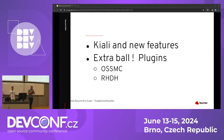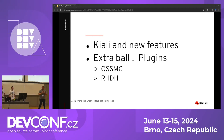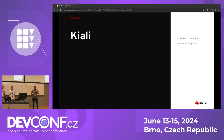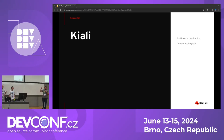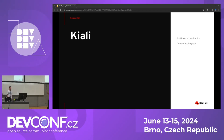This is the agenda for today: we are going to have a rundown about Kiali, then move to the Kiali plugins — first the OSSMC OpenShift console, and then we'll talk about Kiali in the Red Hat Developer Hub, which is the Red Hat product based on Backstage. Kiali is a project we started six years ago, shortly after Istio, and is the official observability console for Istio, included in the CNCF. The repo has more than 3,000 stars, 400 forks, and more than 100 contributors.